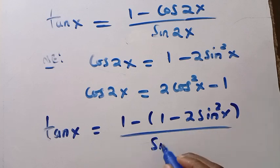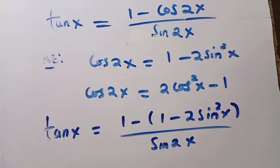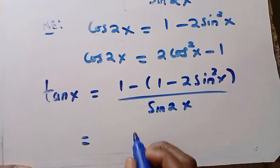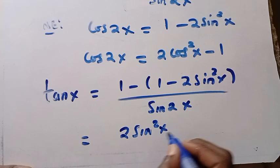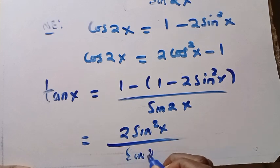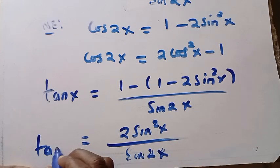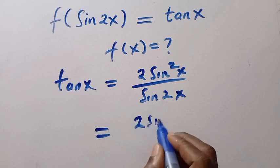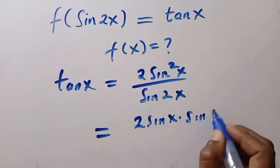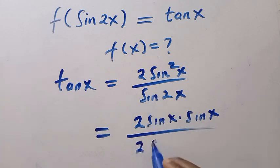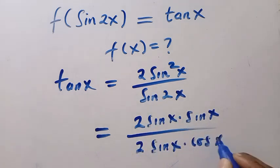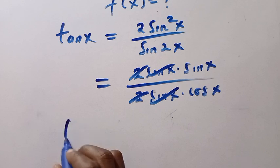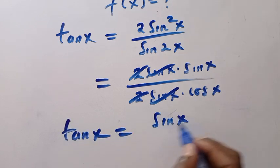Divided by sin 2x. Then we open these parentheses: plus 1 minus 1 cancel, and we have only 2 sin squared x divided by sin 2x, and all this equals tan x. So then we have 2 sin squared x, which is 2 sin x multiplied by sin x, divided by sin 2x which gives us 2 sin x multiplied by cos x. So sin cancels sin and 2 also cancels 2. We have only sin x divided by cos x, which equals tan x. So this proves the identity.